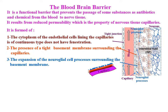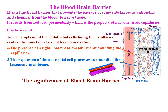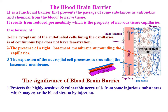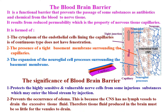The significance of the blood-brain barrier: it protects the highly sensitive and vulnerable nerve cells from injurious substances which may enter the bloodstream by injection. It also prevents the occurrence of edema, because the central nervous system has no lymphatics to drain excessive tissue fluid as elsewhere in the body, so the tissue fluid produced in the brain must be very little, as only the ventricles are responsible for its drainage.